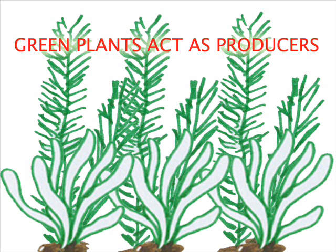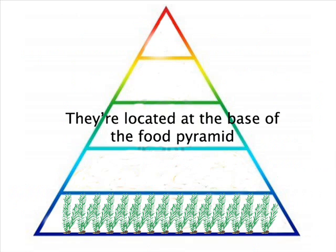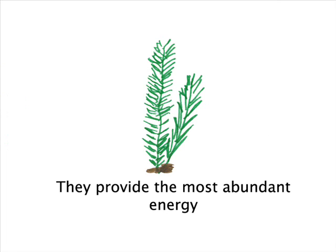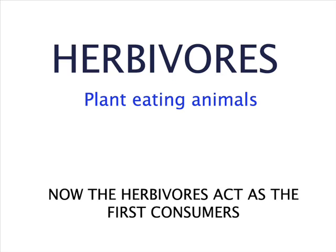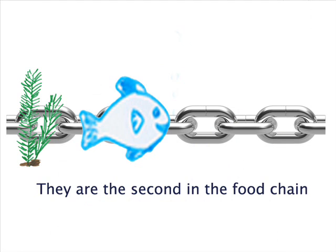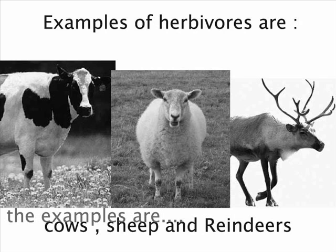Green plants act as producers; they are located at the base of the food pyramid. They are the first in the food chain and provide the most abundant energy. Now the herbivores act as the first consumers; they are located at the second floor of the pyramid. They are the second in the food chain, and examples are cows, sheep, and reindeer.